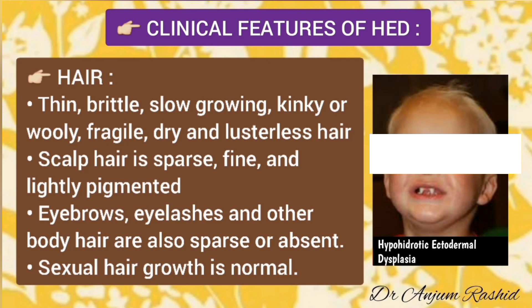These patients have thin, brittle, slow-growing, kinky or woolly, fragile, dry, and lusterless hair. Scalp hair is sparse, fine, and lightly pigmented. Eyebrows, eyelashes, and other body hair are also sparse or absent, but sexual hair growth is normal.